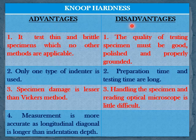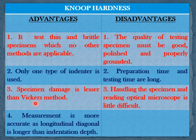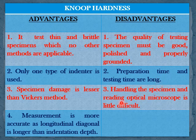Advantages and disadvantages of Knoop hardness testing. Under advantages: the method is applicable to test thin and brittle samples where no other methods are applicable; only one type of indenter is used; specimen damage is lesser compared to the Vickers method; and the measurement is more accurate as the longitudinal diagonal is longer than the indentation depth. Under disadvantages: the quality of the testing specimen must be good — polished and properly ground; both preparation time and testing time are long, making it a time-consuming method; and handling the specimen and reading the optical microscope is more difficult compared to the Vickers method.